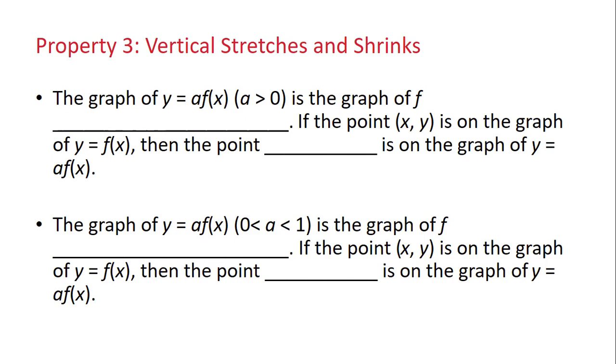So let's summarize this property. The graph of y, which is a times f(x), where a is greater than 1, is the graph of f vertically stretched by a factor of a. So if the point (x, y) is on the graph of y equals f(x), then the point (x, ay) is on the graph of y equals af(x).